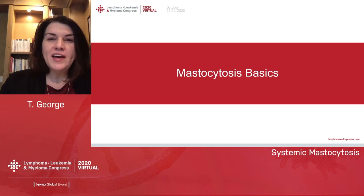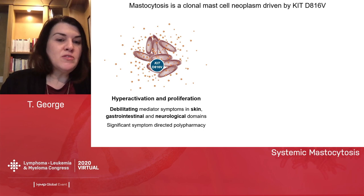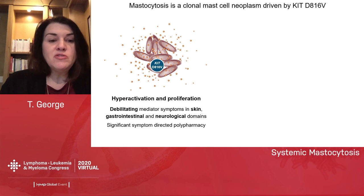Mastocytosis is a clonal mast cell neoplasm driven by a mutation D816V in KIT. This results in hyperactivation and proliferation of neoplastic mast cells that can lead to debilitating mediator symptoms in skin, GI, and neurological domains. And these patients have significant symptom-directed polypharmacy.